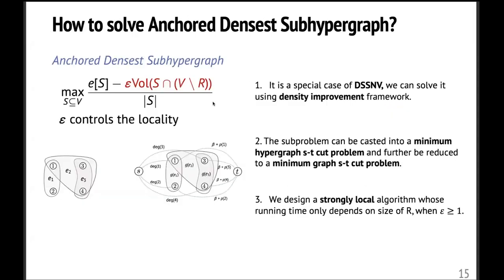And we make three observations. So first, this objective is a special case of DSSNV we proposed. And we can solve it using density improvement framework. Also, the decision subproblem can be casted into a minimum hyper-ST-cut problem and further be reduced to a minimum graph-ST-cut problem, since here is some really nice structure that allows this reduction.